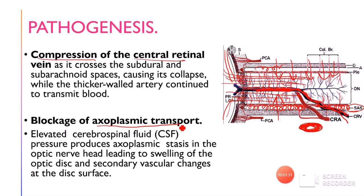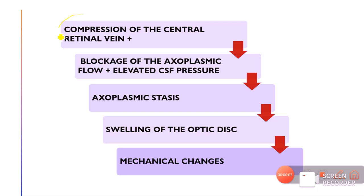Compression of the central retinal vein together with blockage of axoplasmic flow — due to raised intracranial or CSF pressure — causes axoplasmic stasis. The axoplasm builds up behind the retina before the point where veins exit, causing swelling of the optic disc. The mechanical changes resulting from this swelling are what we see in the optic disc.